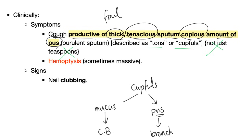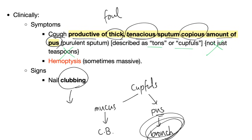Signs: nail clubbing. With any suppurative lung disease, expect nail clubbing. You can also see nail clubbing with idiopathic pulmonary fibrosis and lung cancer.